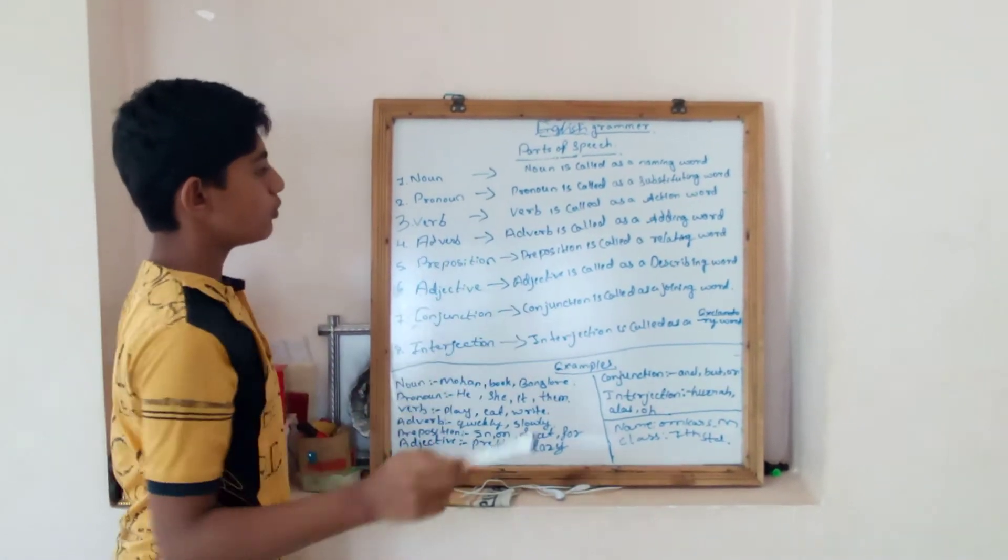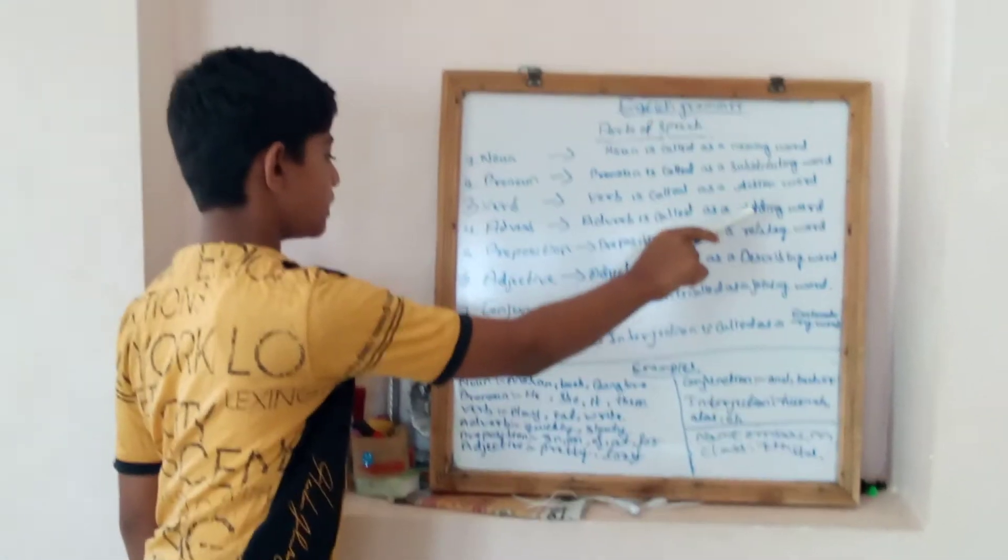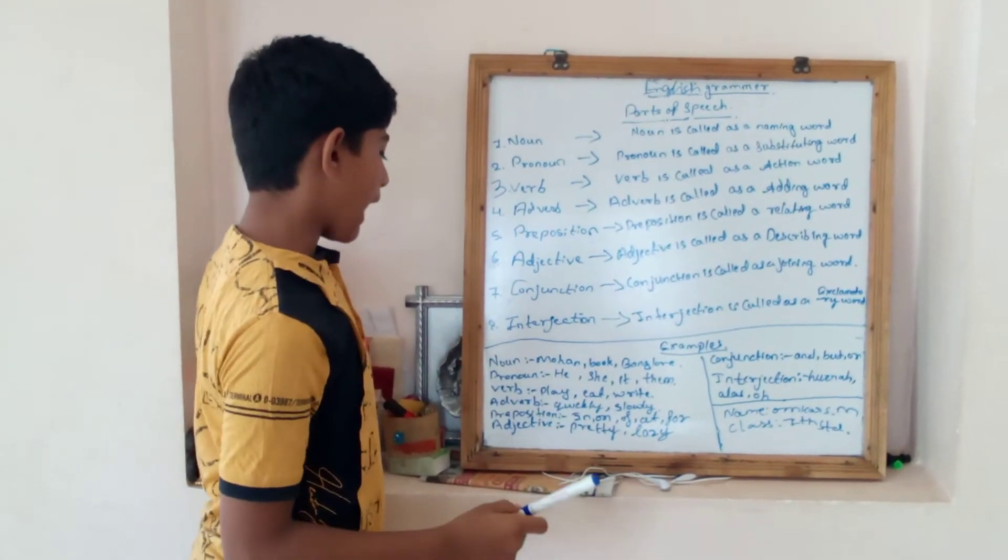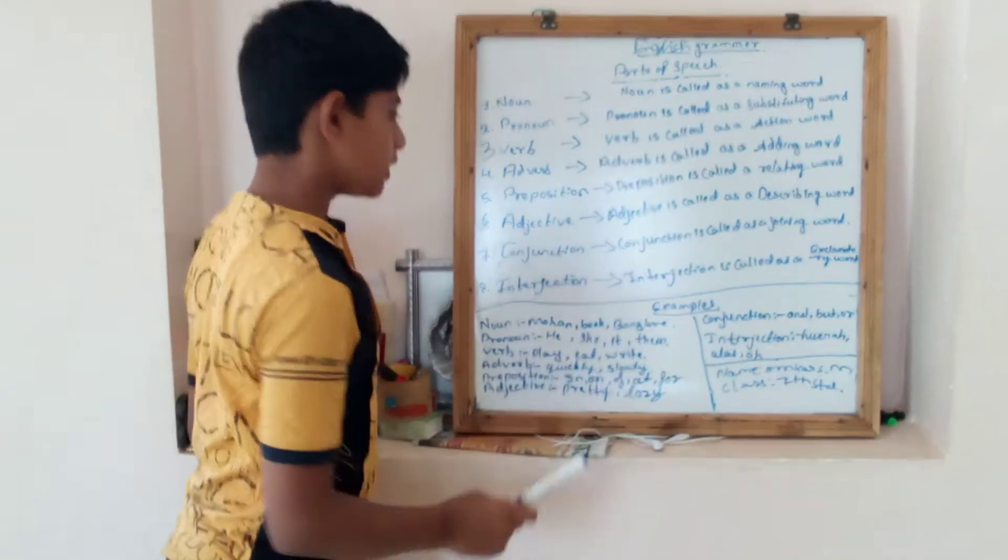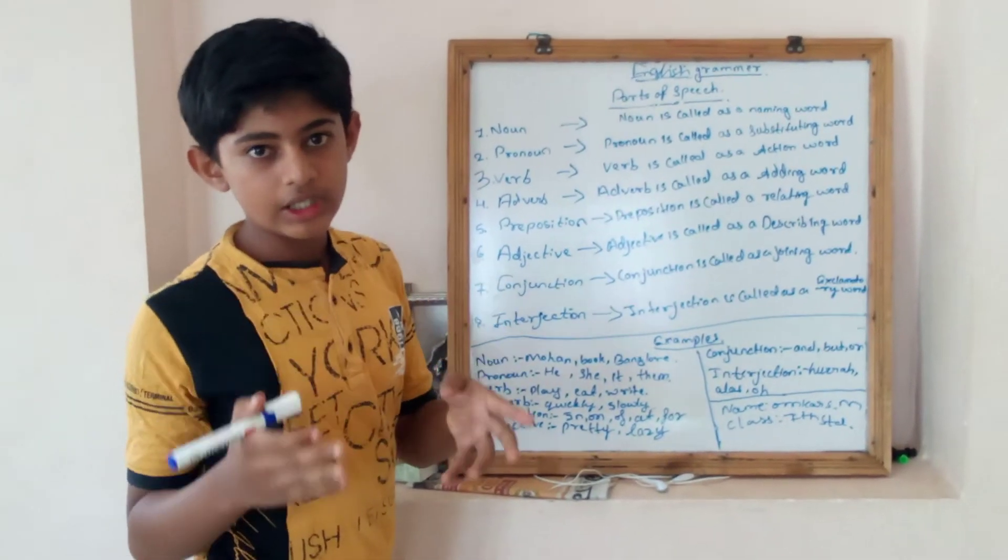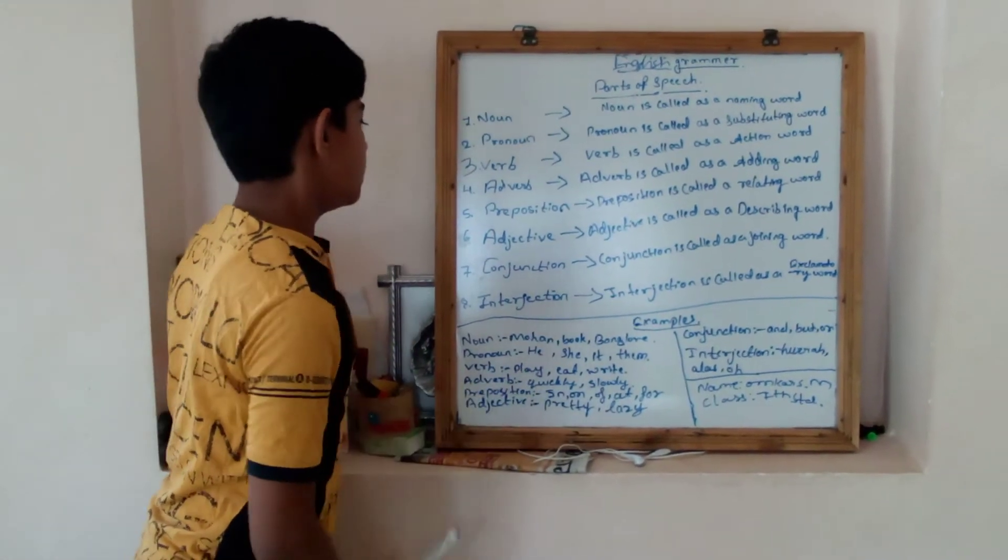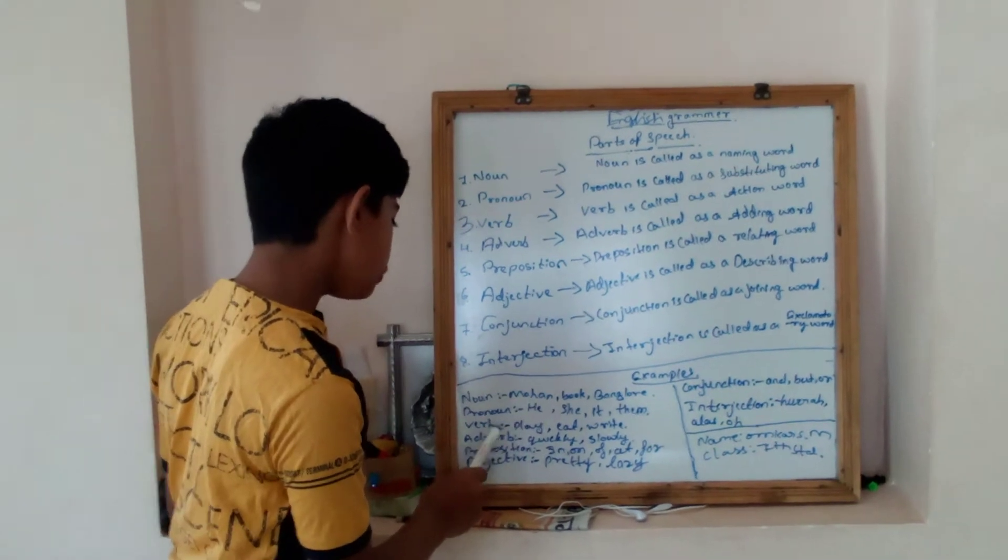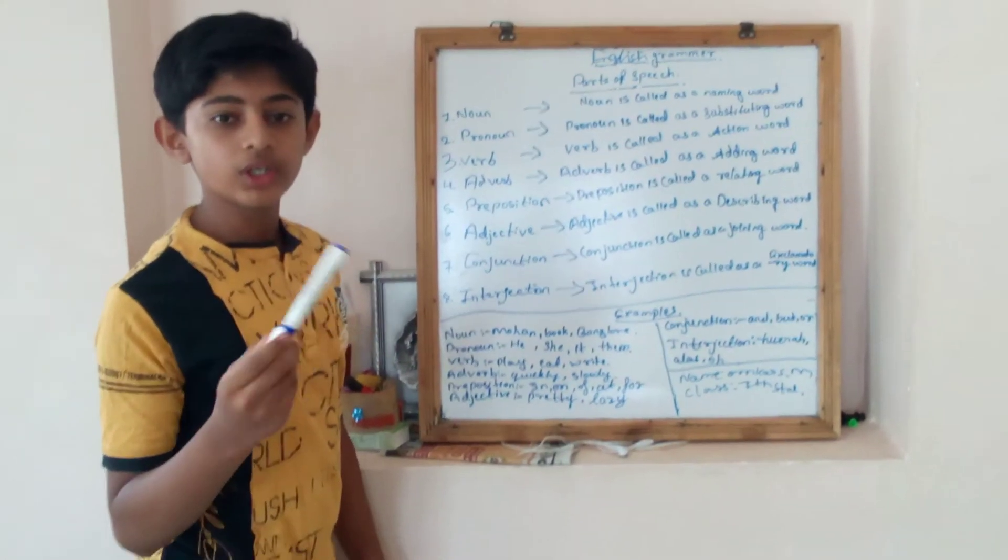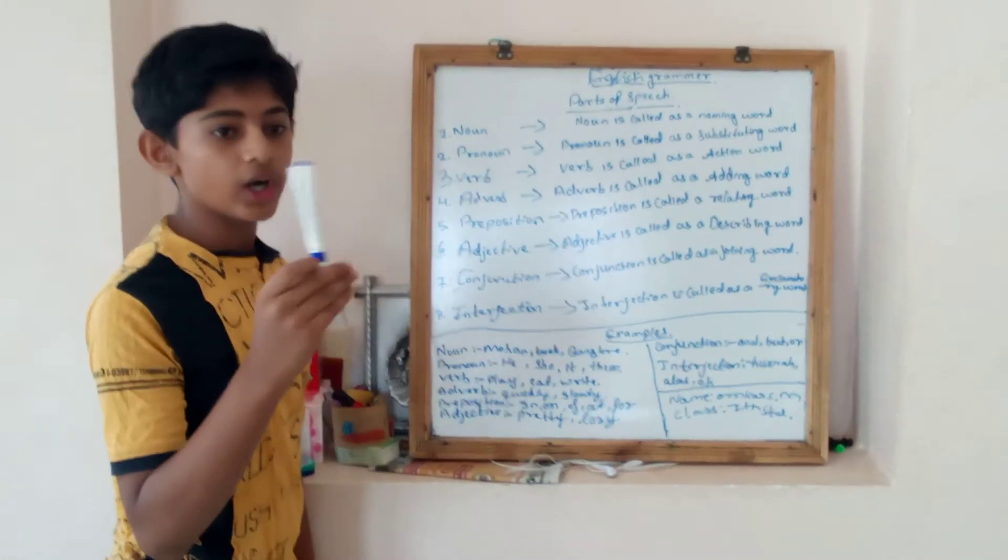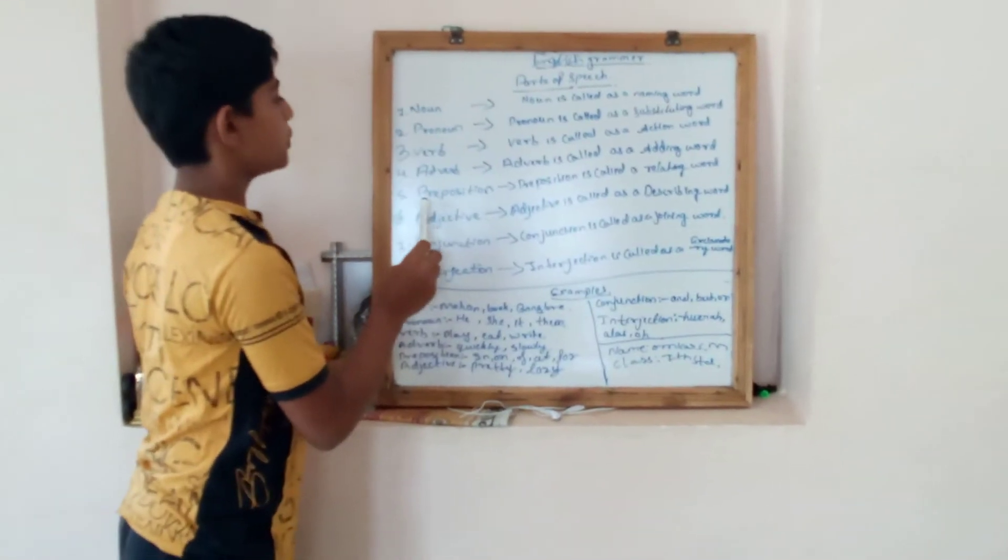Adverb. Then what is adverb? It is called as the adding word. It adds to the verb for some words. Whether you are playing quickly or slowly - the examples are quickly or slowly. In verb's example, whether he is eating slowly or quickly, whether Mohan eats slowly or quickly, it informs us.